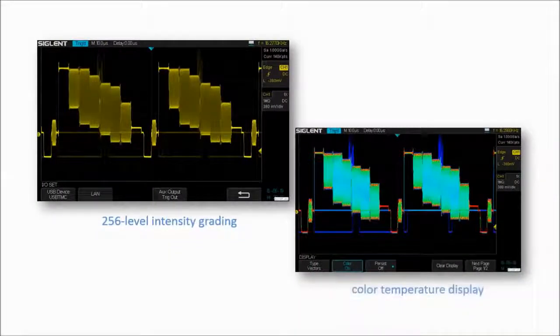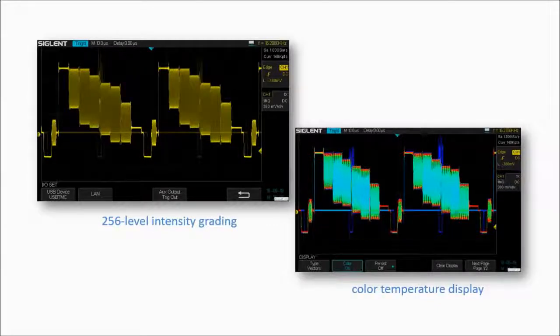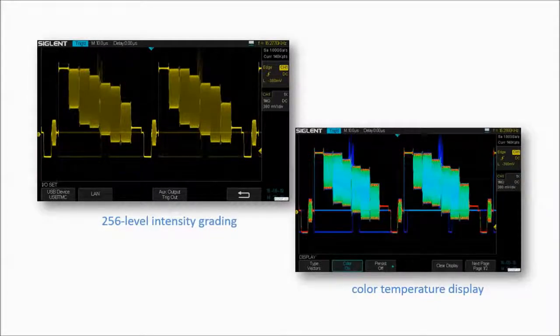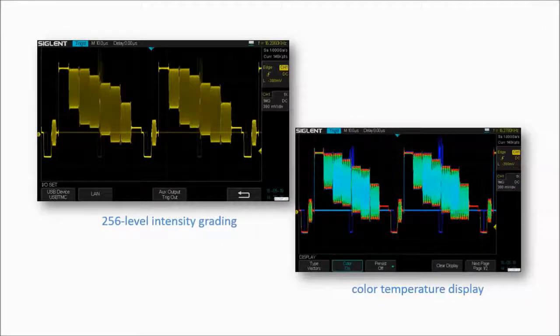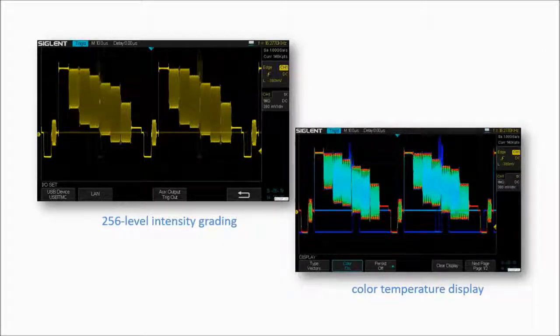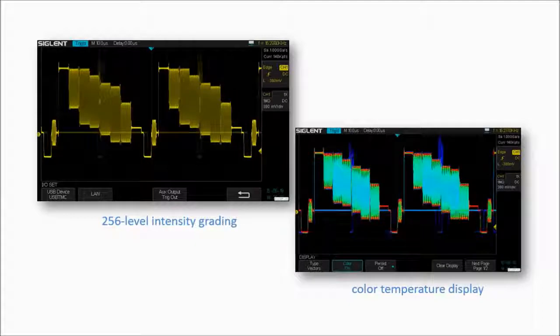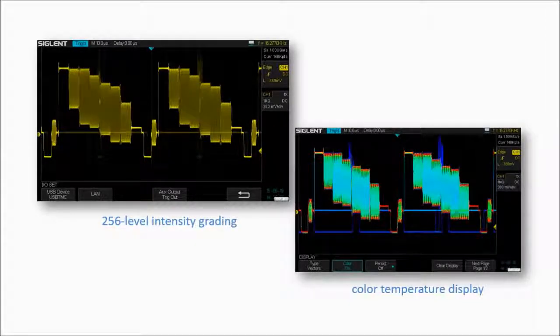The SDS1000X has a 256 intensity grading and color temperature display. SPO display technology provides for fast refresh rates, and the resulting intensity grade trace is brighter for often occurring display points, and dimmer for less often occurring points.